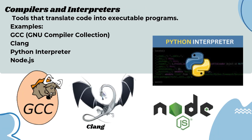Compilers and Interpreters are tools that translate code into executable programs. Examples include GCC (GNU Compiler Collection), Clang, Python Interpreter, and Node.js.